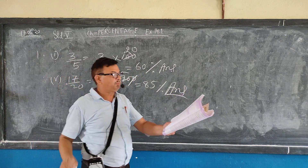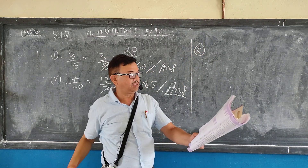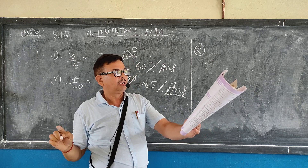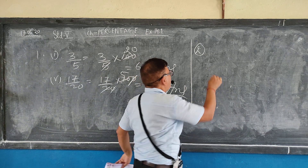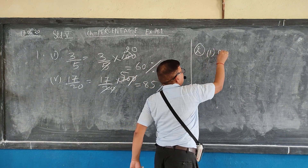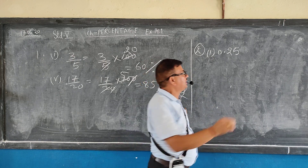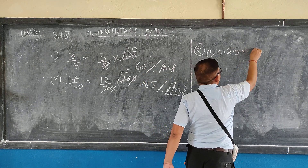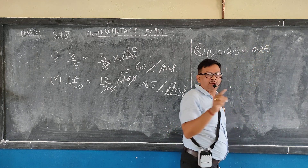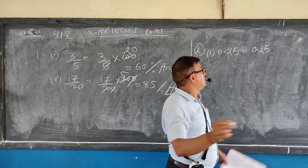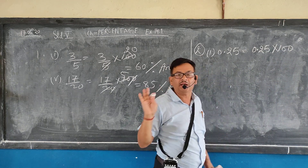This is one type of question. Next, question 2: convert each of the following decimals into percent — so you multiply with 100. First is 0.25. To convert 0.25, multiply with 100.